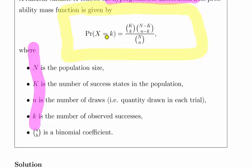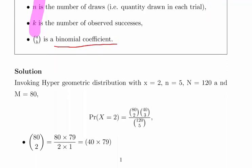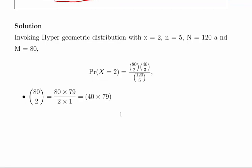You notice that we have quite a lot going on here in terms of binomial coefficients. This really is a good bit of work doing these by hand. The binomial coefficients are the key thing here as well as just recognizing it as a hypergeometric distribution. Invoking the hypergeometric distribution when x equals 2, n equals 5, N equals 120, and K equals 80.